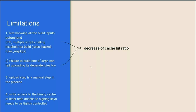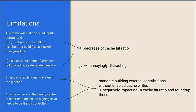While problems one and two might just decrease cache hit rates and three might be just annoying, three and four together basically require some sort of approval process for PRs, at least for external PRs. And that's all not very nice and negatively impacts both cache hit rate and the runtime for developers.